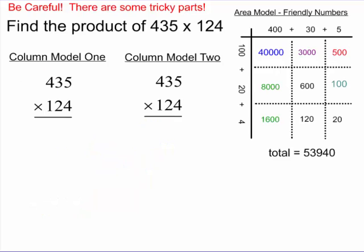So let's try our final example here. This is going to be a big one. 435 times 124. And I'm going to have to move kind of quickly on this one because it's going to take a few minutes to do it. I have my area model in the right corner here so we can always look back. You can see the result is 53,940.